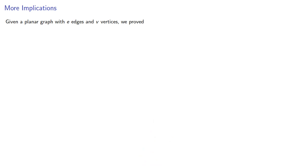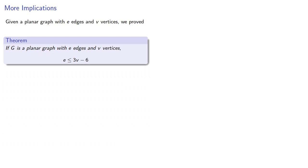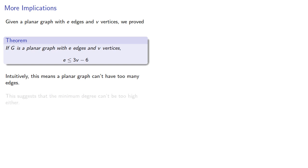Given a planar graph with e edges and v vertices, we proved that e has to be less than or equal to 3v minus 6. Intuitively, this means a planar graph can't have too many edges. This suggests that the minimum degree can't be too high either.